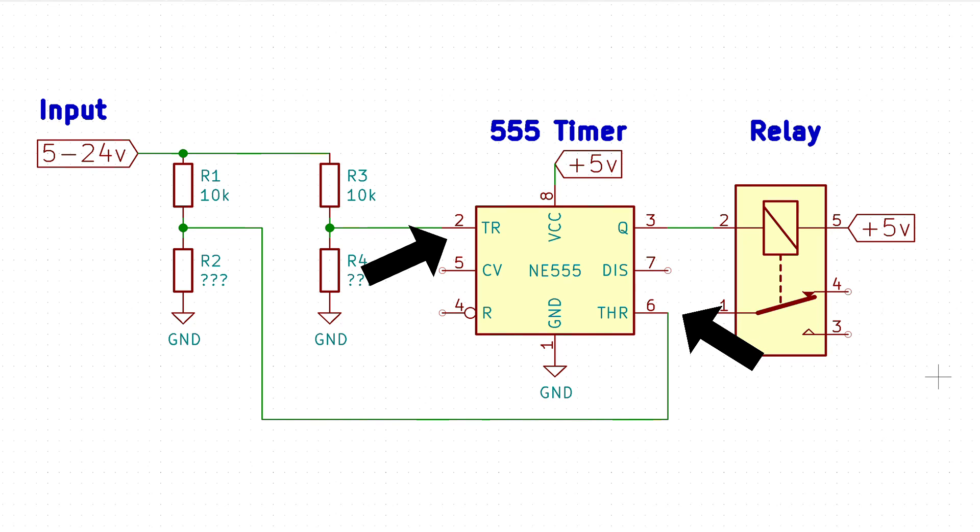Pins 2 and 6 of the 555 timer measure the voltage through a pair of voltage dividers. If the voltage is high enough the timer will switch on the relay, and if the voltage drops below a certain value the timer will switch off the relay.